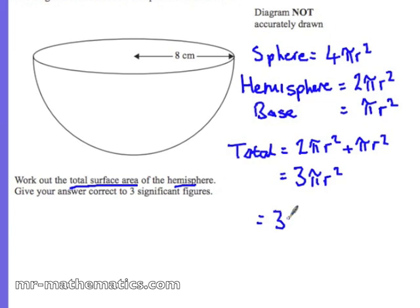So that is 3 times pi times the radius 8 squared, which is 3 times 64 pi, which comes out as 602.88 cm squared.